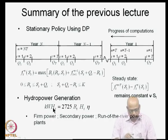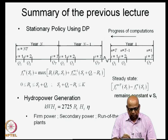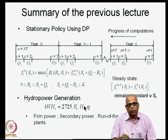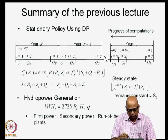We then introduced the concept of hydropower generation. The kinetic energy possessed by water falling through a particular height is converted into hydropower using turbines and generators. Typically, the power generated is a function of the discharge as well as the net head available. We derived the expression for hydropower generation as 2725·R_t·H_t·η, where R_t is the discharge through the penstocks in million cubic meters, H_t is the net head in meters, and η is the overall efficiency accounting for turbine and generator efficiencies.